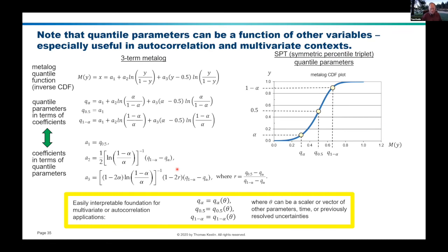A similar question has to do with multivariate metalogs. What if your probability distribution over, say, the value of a piece of real estate is conditional on what happens previously — like a movement in the overall real estate market? Both of those could be easily modeled by making your quantile parameters a function of any other variable you want. They could be a function of time or a function of previous outcomes of previous metalog or non-metalog distributions. By modeling these parameters as evolving according to whatever scalar or vector of other parameters might be relevant, you can extend this system to handle far more complicated problems.